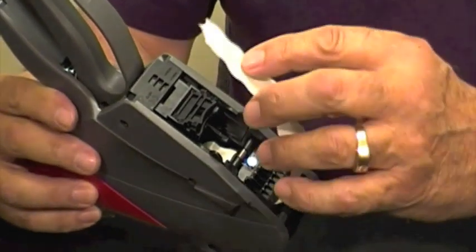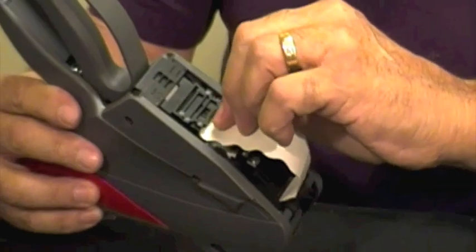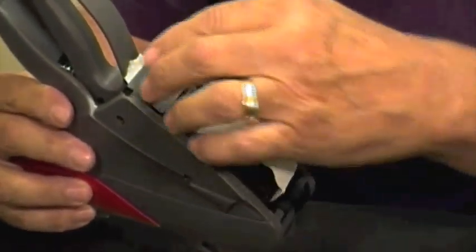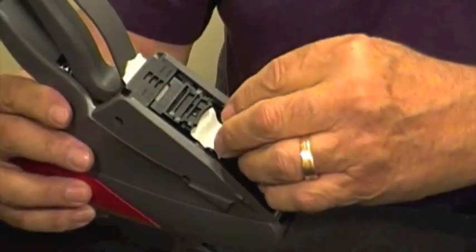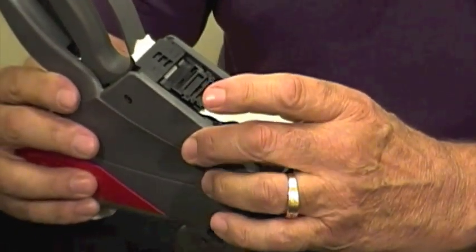We now feed the backing sheet through the break on the printer, straight through until it comes out the back side. Once we see it appear on the back side, we can lock the break down and we're now ready to print labels.